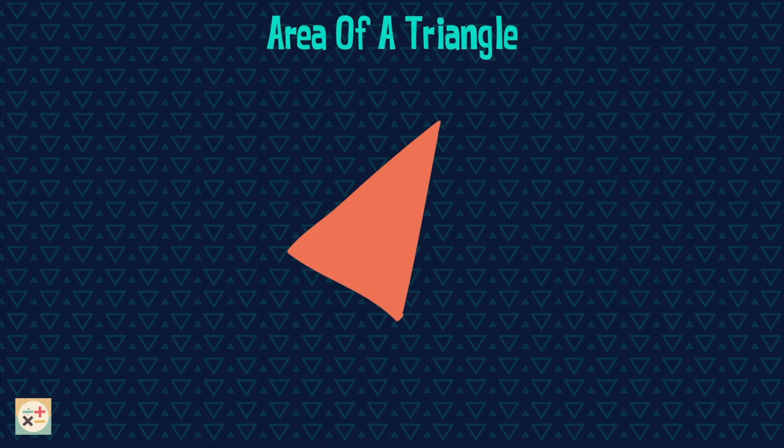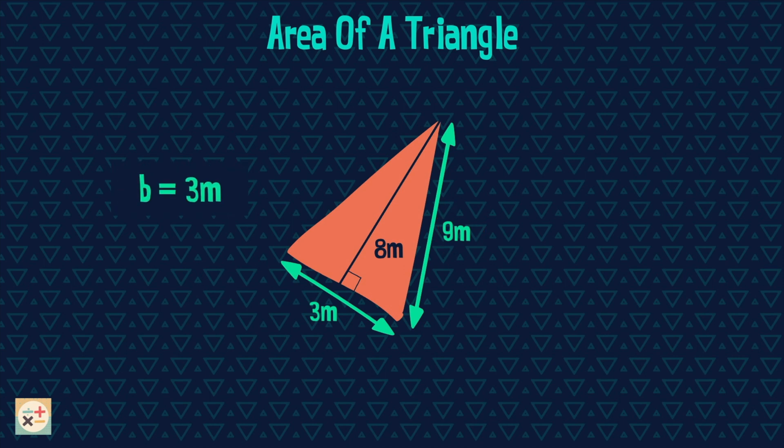Now have a look at this example. Notice we are given a third length here of 9 meters. Well we can actually ignore this as it is not the perpendicular height and it is not the base which the height has been measured from. Let's use the formula to calculate the area.